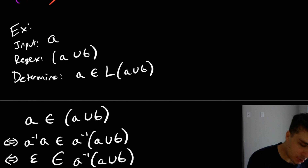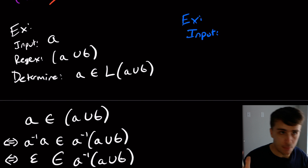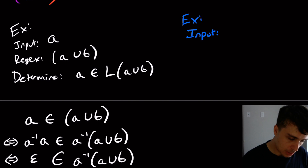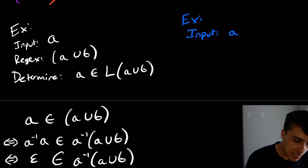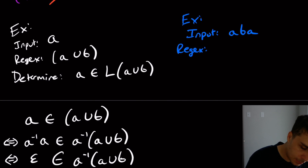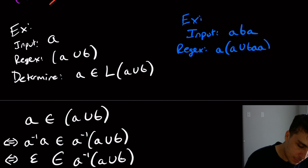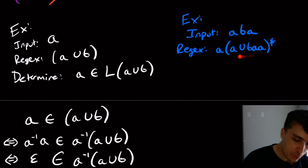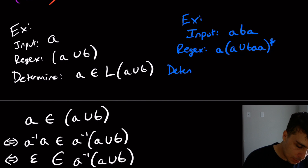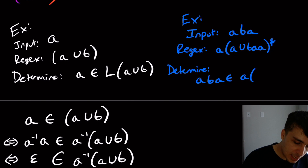That's a pretty simple example. Let's do a slightly more complicated one. We have the string `a`, `b`, `a`, and our regex is `a(a union b)aa*`. So we have unions, concatenations, and stars — all of them. What we want to determine is whether `aba` can be generated by this regex.